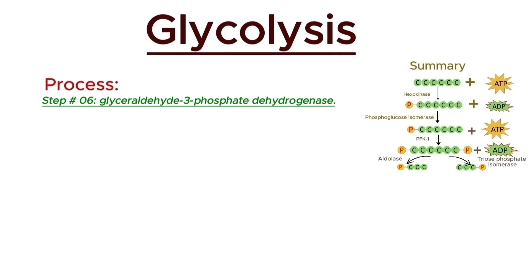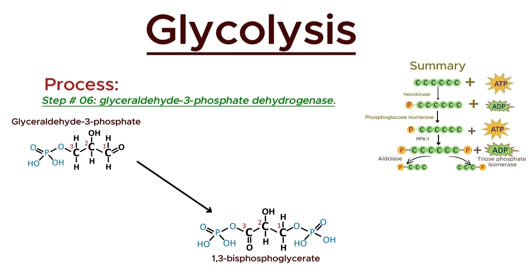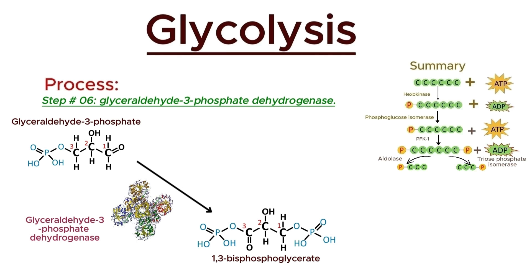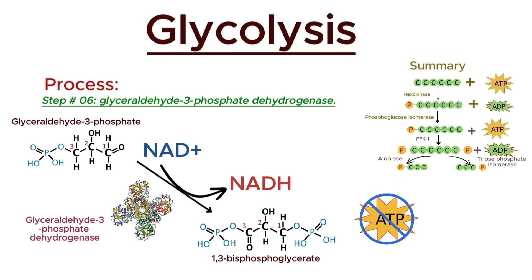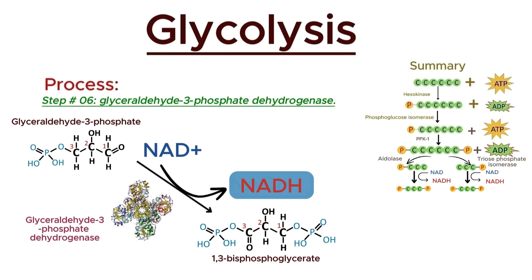In the sixth step of glycolysis, glyceraldehyde-3-phosphate is oxidized and phosphorylated to form 1,3-bisphosphoglycerate. The enzyme glyceraldehyde-3-phosphate dehydrogenase catalyzes this reaction. During this step, NAD is reduced to NADH, capturing energy in the form of high-energy electrons. Additionally, an inorganic phosphate is added to G3P without the use of ATP, forming 1,3-bisphosphoglycerate. This step is crucial as it generates NADH, which can be used in oxidative phosphorylation to produce more ATP. So, glyceraldehyde-3-phosphate is converted into 1,3-bisphosphoglycerate while reducing NAD to NADH, catalyzed by glyceraldehyde-3-phosphate dehydrogenase.